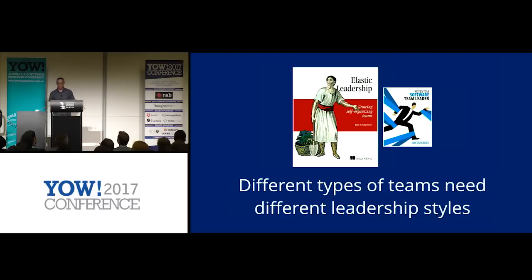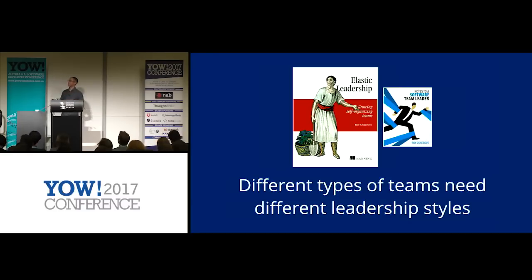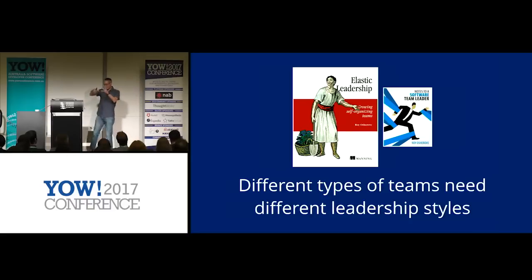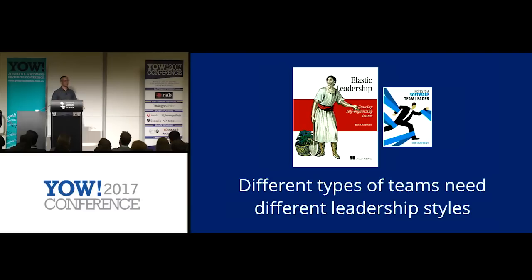There's a great book on this topic by Roy Osherov about elastic leadership. Basically, different types of teams with different levels of experience and maturity require different leadership styles. If you've ever worked with a very junior team, they tend to work best when you tell them what to do — they don't have the collective experience to solve their own problems. On the other side, if you have a team full of ninjas, rockstars, 10Xers — don't tell them what to do because they know what to do and you'll just get friction. What you're trying to do is make teams more mature so they start solving their own problems.